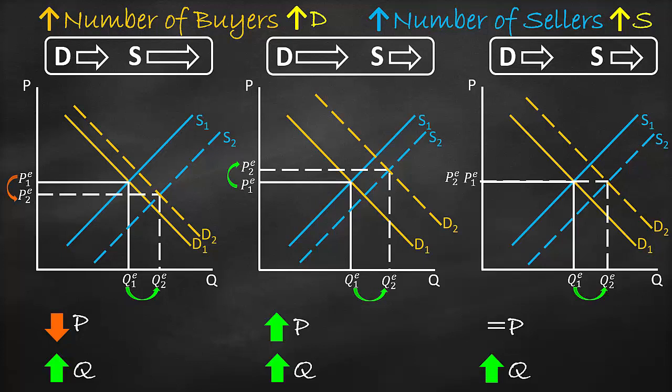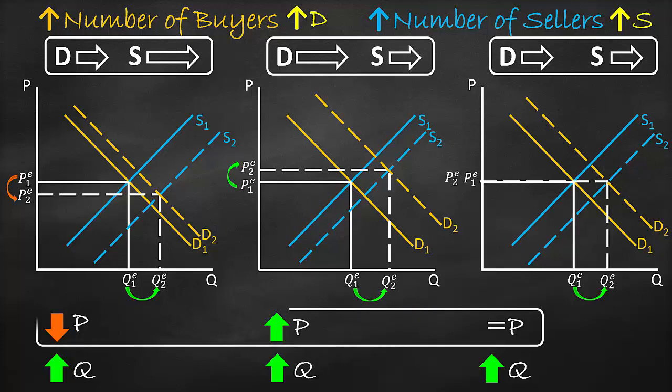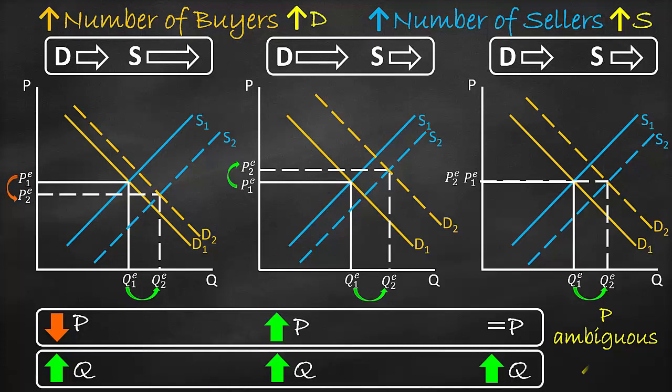Comparing the three graphs, we discover that price decreases, increases, or remains constant, which means price is ambiguous and could change in any direction. However, in all three scenarios quantity increases. Therefore, quantity will always increase when both supply and demand shift to the right.